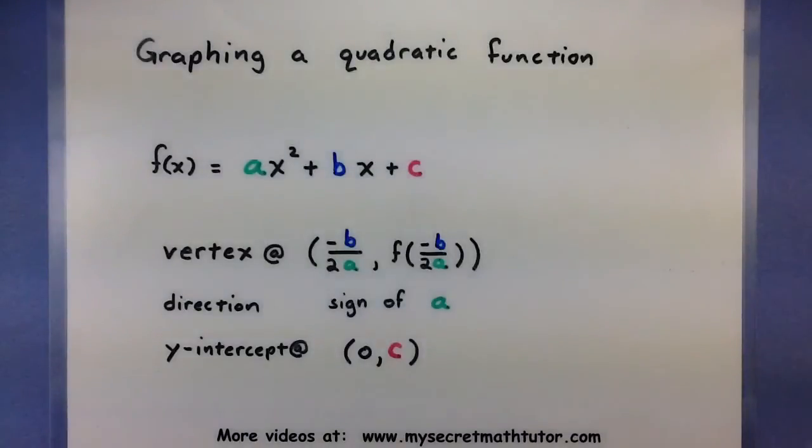Now in addition to just knowing the vertex of that quadratic function, you can also tell whether it is facing up or facing down. That all comes from the sign of a. So if it's positive, your parabola is facing up. But if it's negative, then it is facing down.